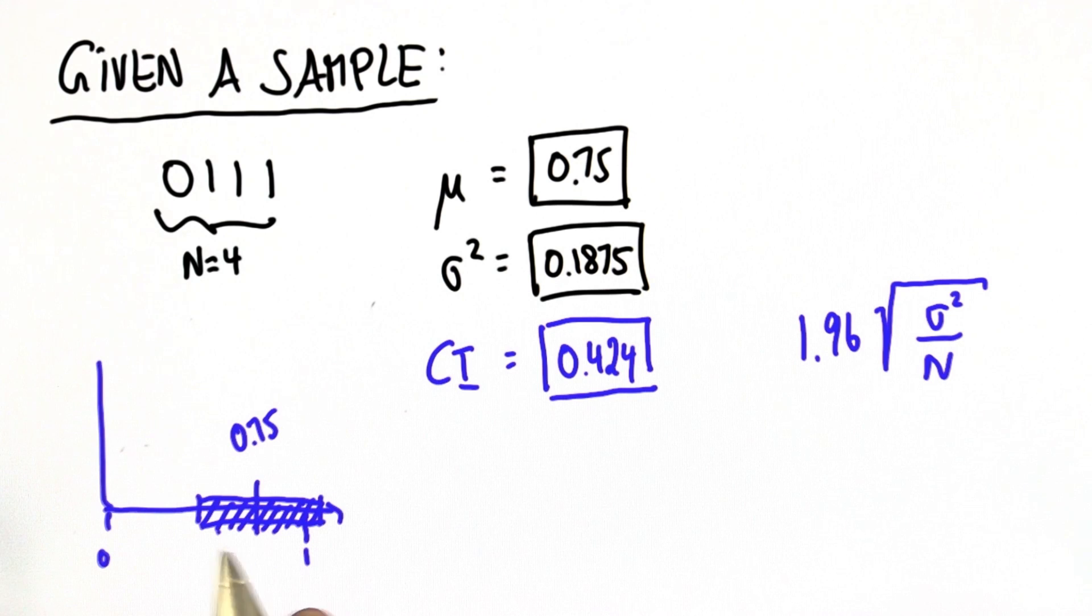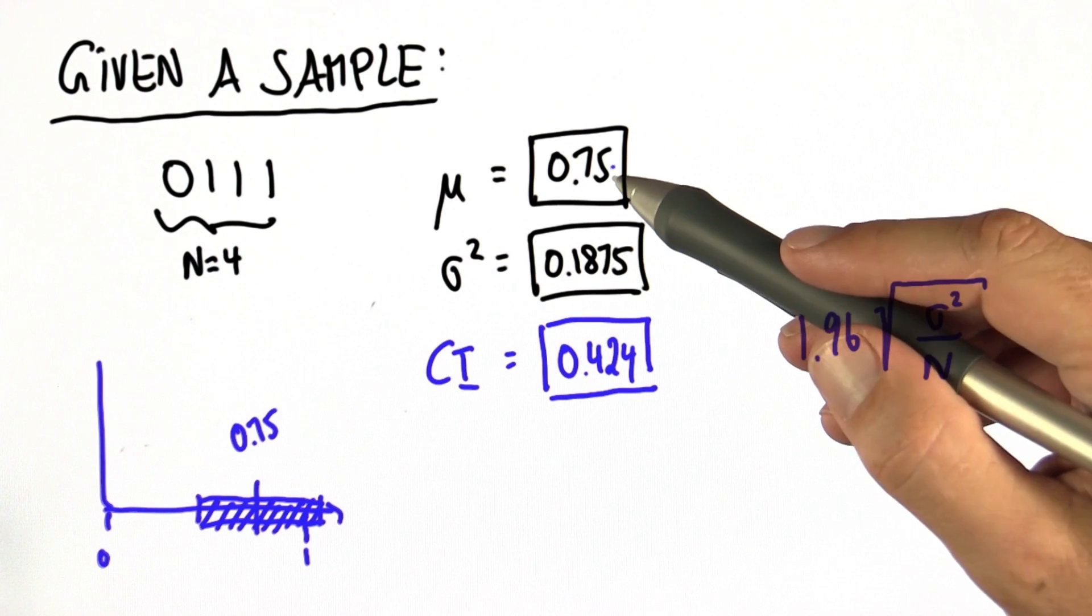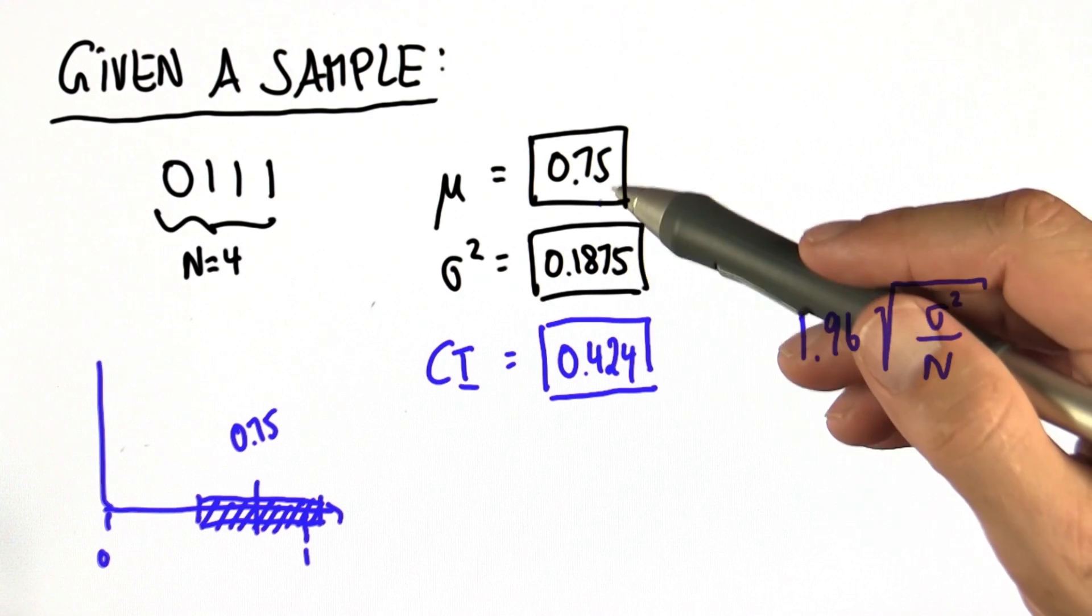In fact, this one does include 0.5. It could be that this coin is perfectly unbiased. 0.75 minus 0.42 is much smaller than 0.5.